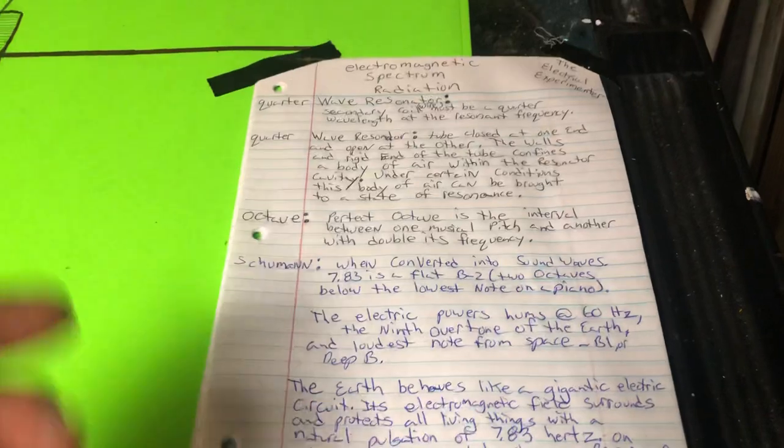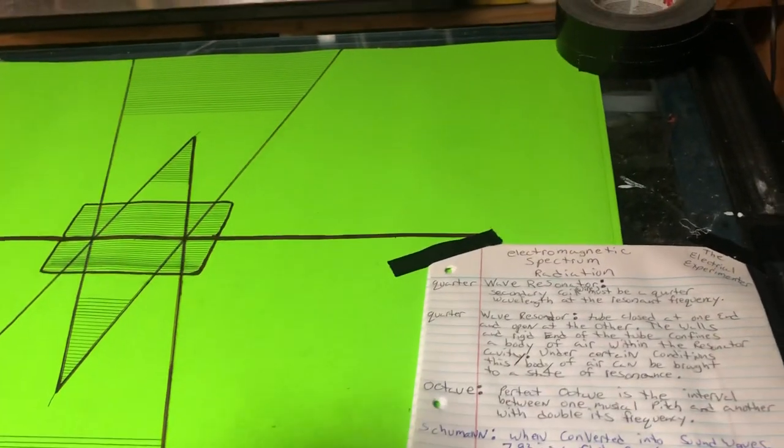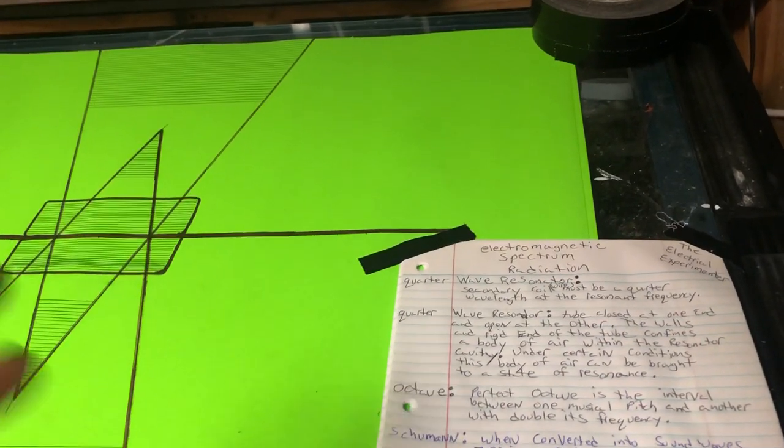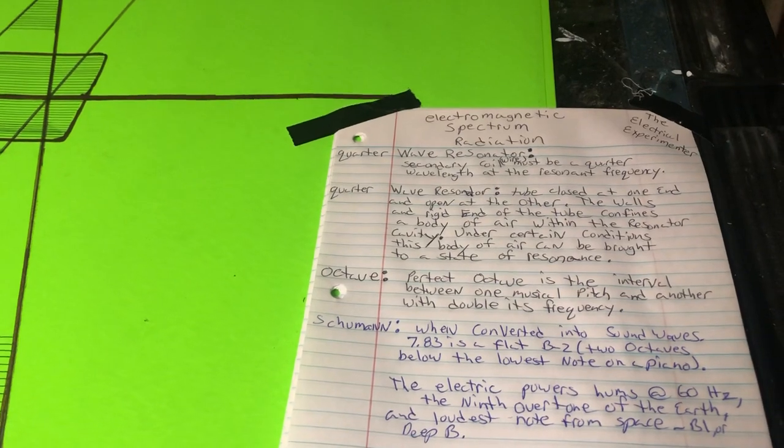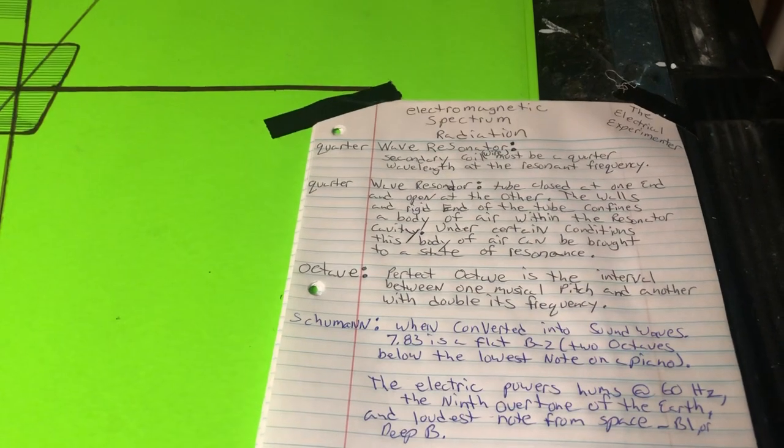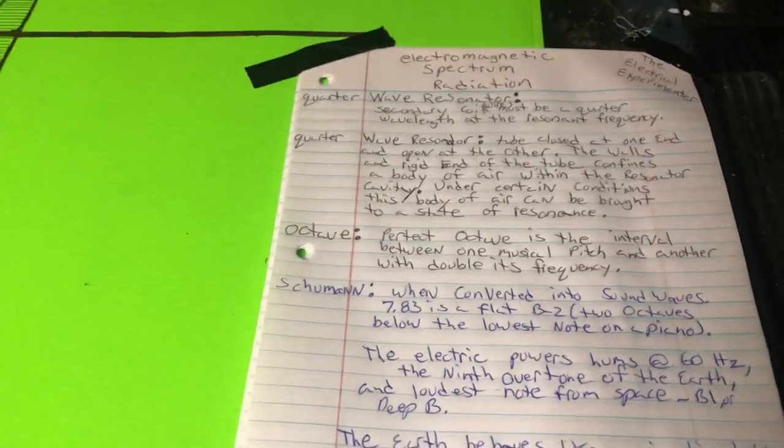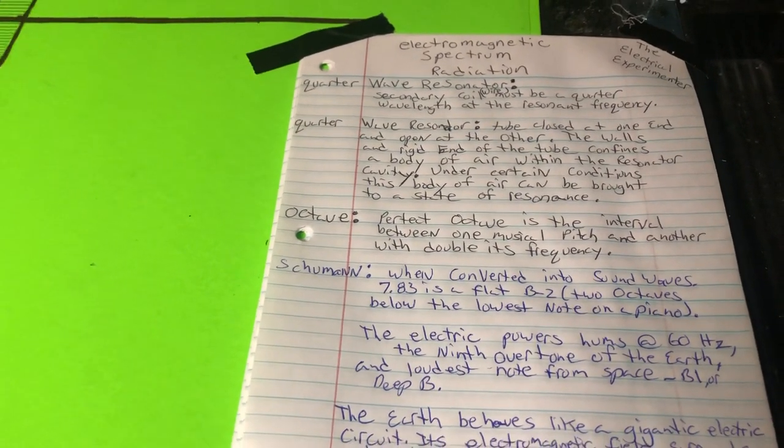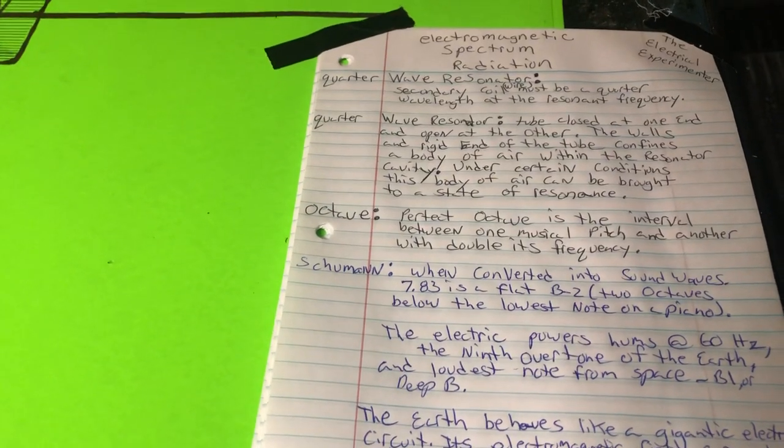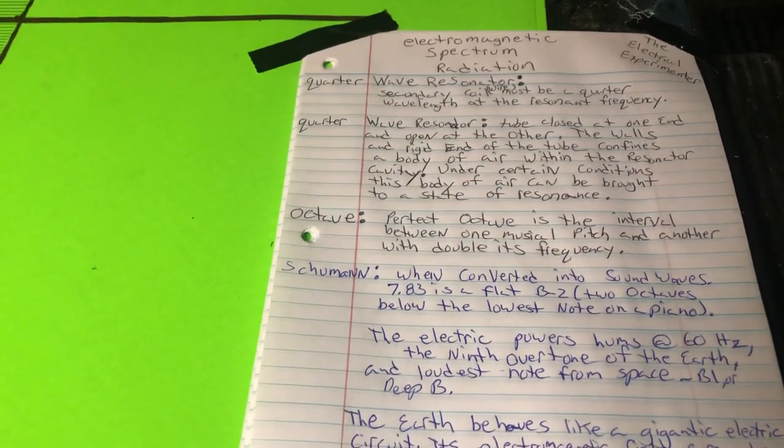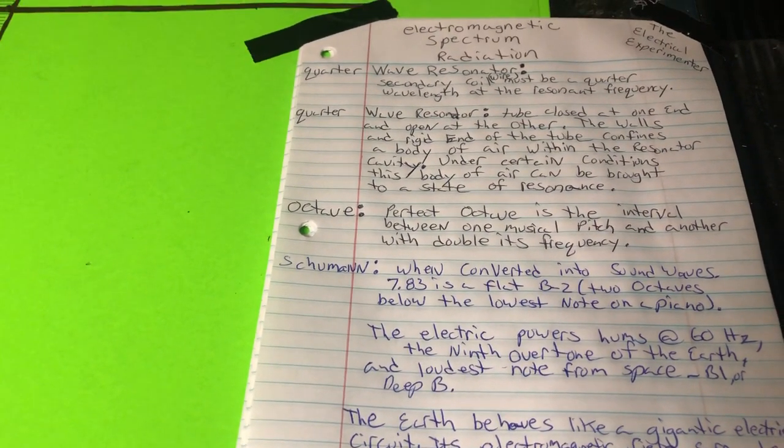Let's go to the Schumann. So, in sound-wise, if you take the Schumann, and this is, sound has a lot to do with this because you get into octaves, you're dealing with sound, you're dealing with electric. It's kind of coinciding, but there's a little differences in a sense. Schumann, when converted into sound waves, 7.83 is a B flat. That's a B2. Two octaves below the lowest note on the piano. Two octaves below the lowest note. That's a big deal, guys. The electric powers hum at 60 hertz here in the USA. And it's the ninth overtone of the Earth. And the loudest note from space is a B1 to a deep B. Solid deep B. Think about that.